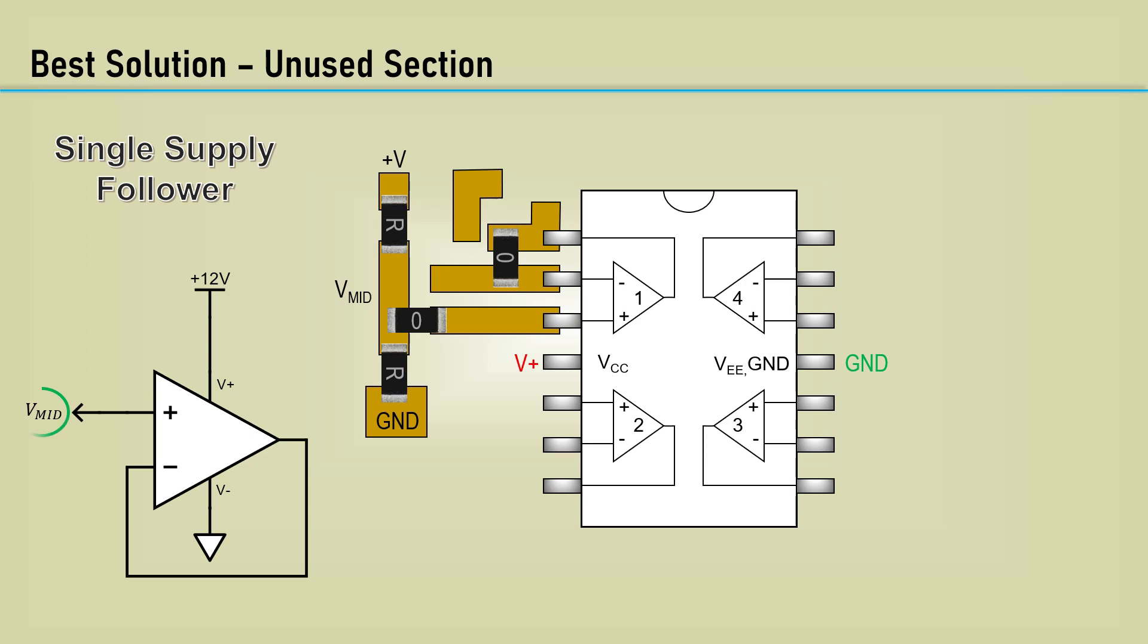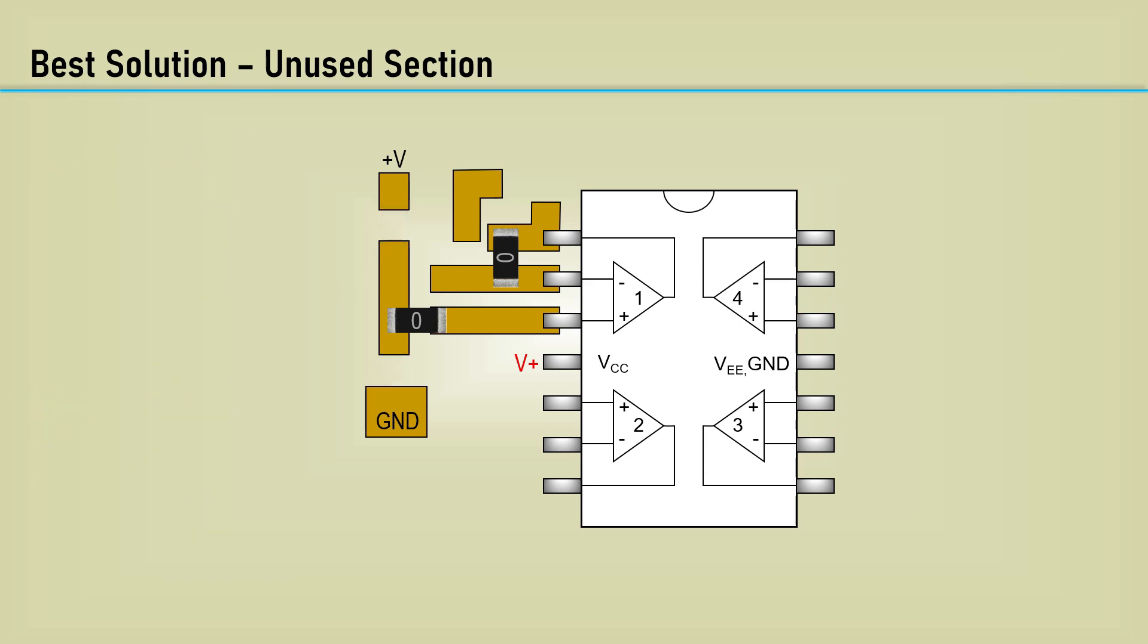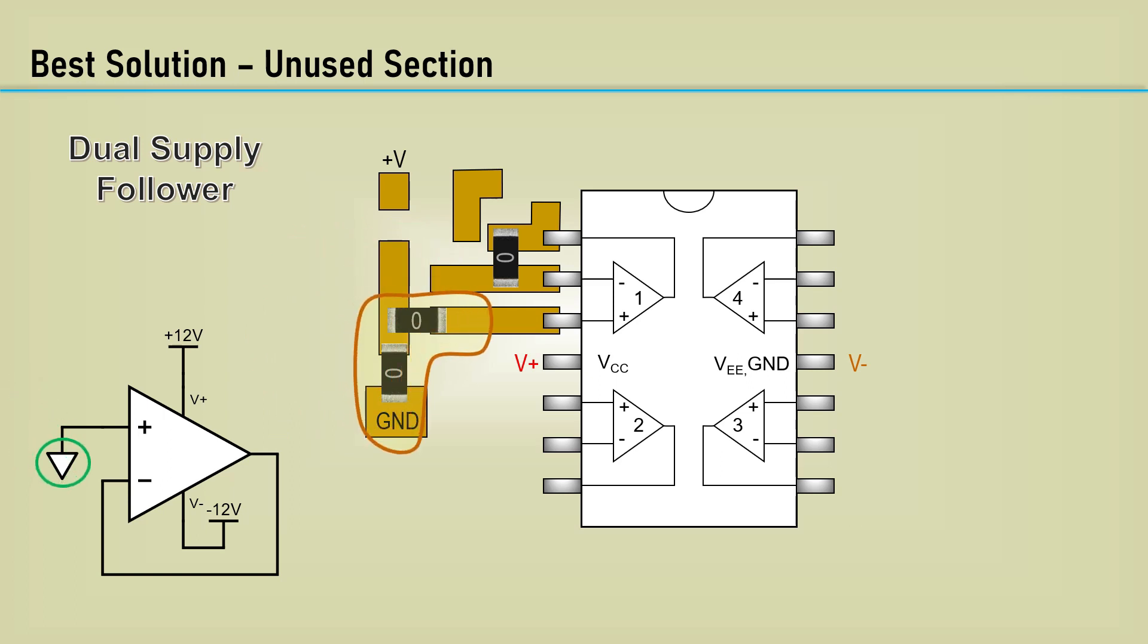Here's a setup for the unused section with a single supply. The pads are available to create a V-MID with a resistive divider, or you can route over whatever source you have for V-MID. It's even more simple to set up the unused section with dual supplies, since the non-inverting input just needs a ground connection.